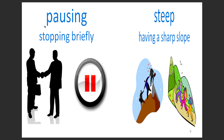The next word is pausing. Some of you will already know how to pause a video — you can actually go ahead and pause this video if you want. When you pause something, it means you are stopping it briefly. Steep is our next word. When something is steep, it means it has a sharp slope. Do you see how the slope goes up really, really fast? It doesn't go over smoothly — it just goes up really sharply. That's the word steep.